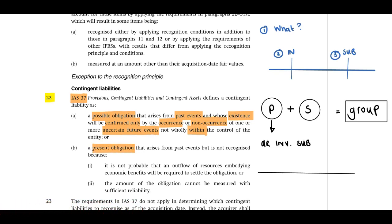Alternatively, it is a present obligation that arises from past events but is not recognised because it is not probable that an outflow of resources embodying economic benefits will be required to settle the obligation, or the amount of the obligation cannot be measured with sufficient reliability. Remember your recognition criteria. In terms of IFRS 3, we only have to meet the definition of a liability to recognise a contingent liability.